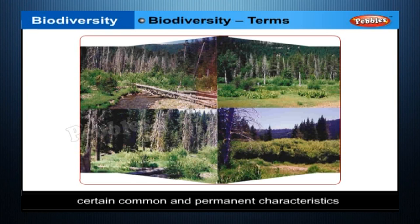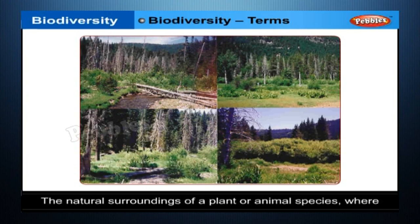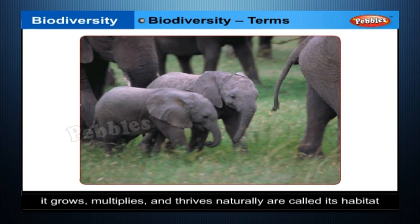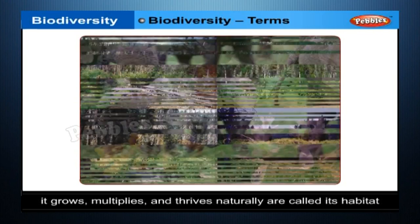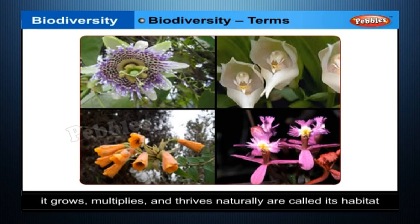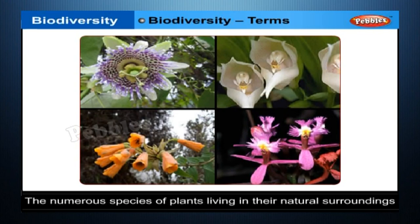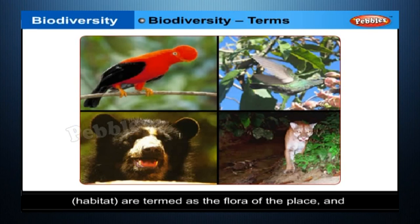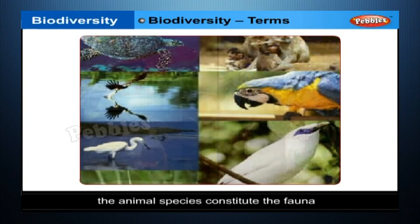The natural surroundings of a plant or animal species where it grows, multiplies and thrives naturally are called its habitat. The numerous species of plants living in their natural surroundings are termed as the flora of the place, and the animal species constitute the fauna.